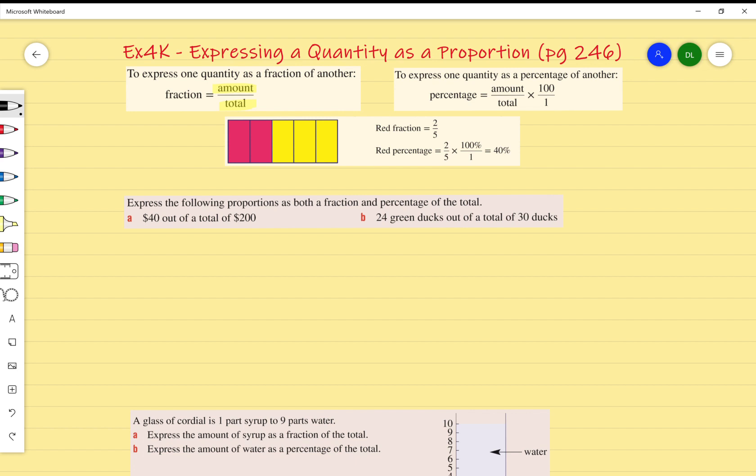As a percentage, what we do is we get the same thing: amount over total, but we multiply it by 100. To multiply by 100, we multiply by 100 over 1. For example, I've got 2 over 5, multiply it by 100, and I end up with 40. I add the percentage sign and it becomes 40%. We'll put this into practice. Express the following proportions as both a fraction and a percentage of the total.